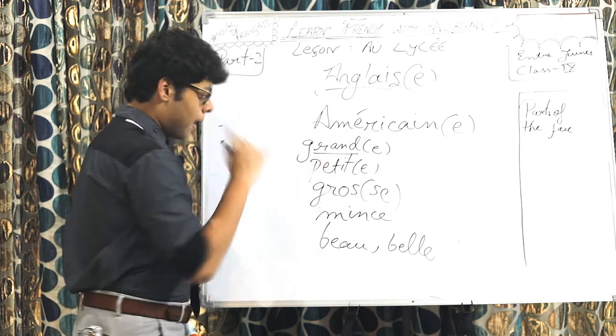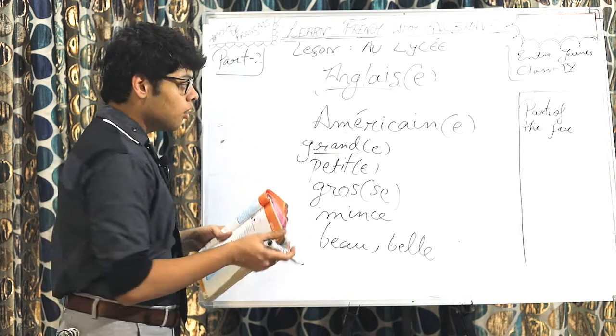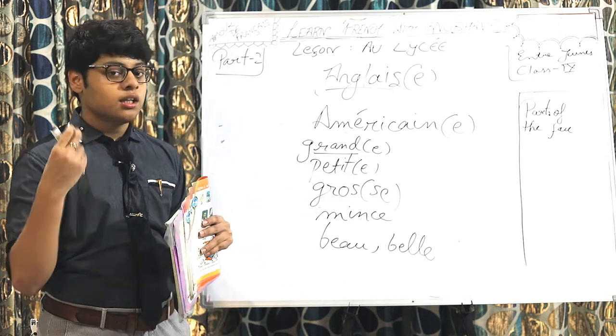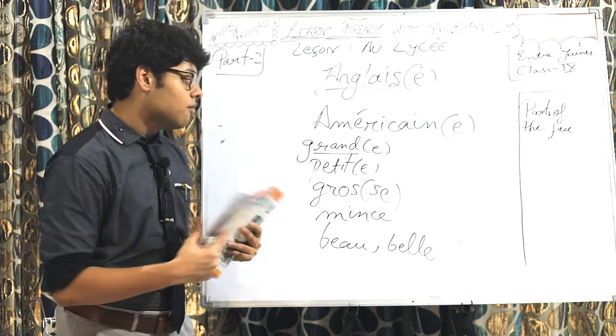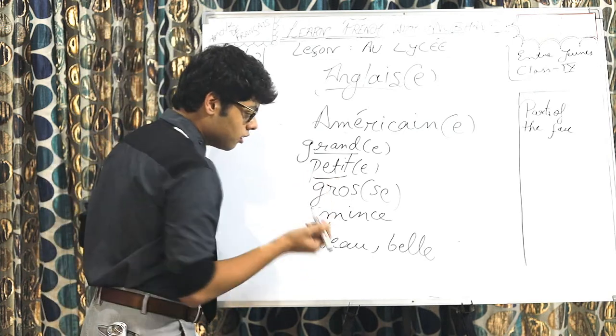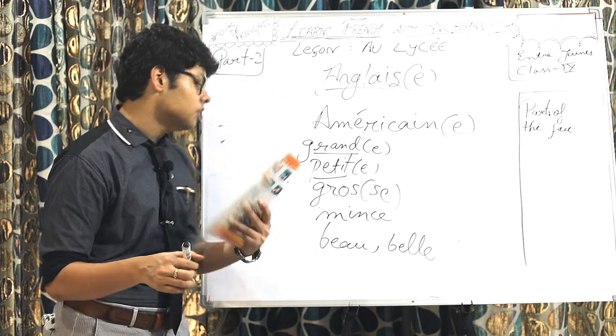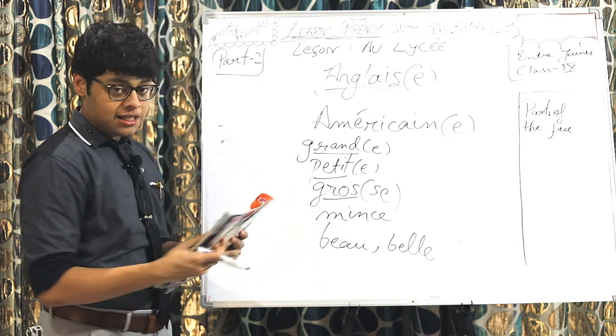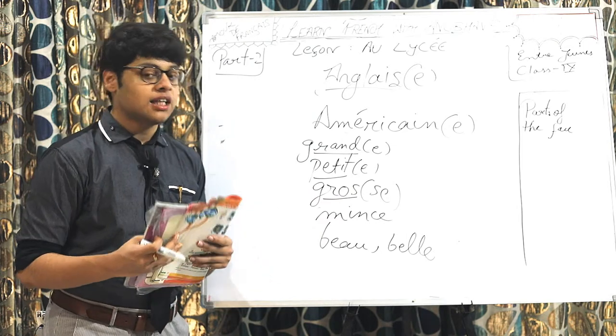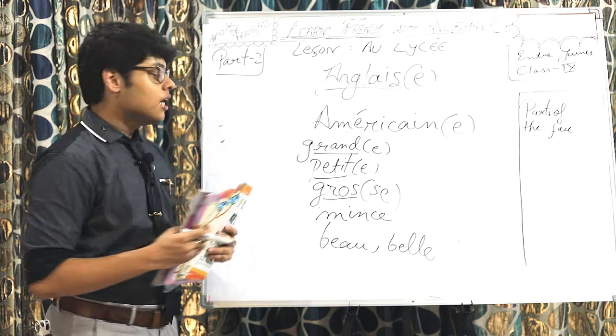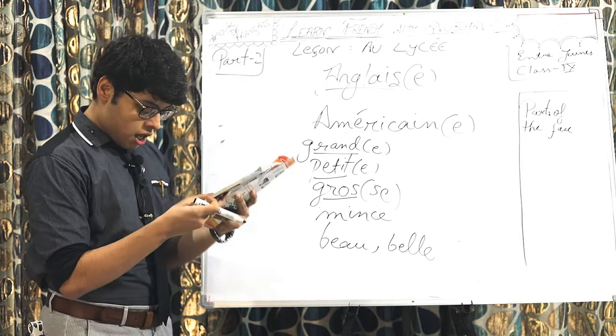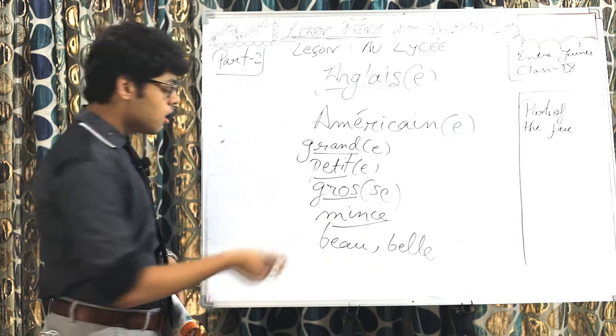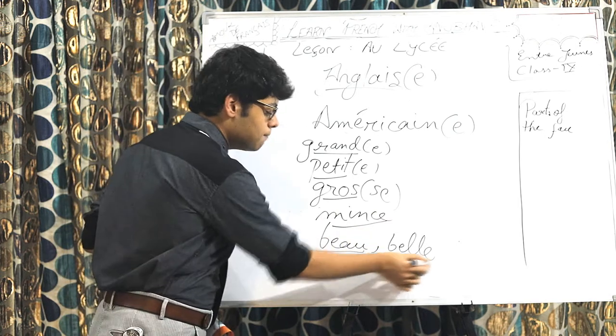These are some features, not all. Like, grand actually means big. But, if you are describing a person, grand translates to tall. Grand for masculine. And if we add an E, it becomes grand. D will be pronounced, it will be tall for feminine. And, petit means small. But in the context, it will mean short. Petit and petite. Petite is the feminine form. Grow is fat. And if we add an S and E at the end, it becomes gross. And gross is used for feminine. And it, again, means fat. Mass means slim. Bo is handsome. And bell is beautiful.